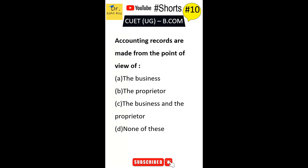Accounting records are made from the point of view of the business. Option B is the proprietor. Option C is the business and the proprietor. Option D is none of these. The correct answer is Option C — accounting records are made from the point of view of the business and the proprietor.